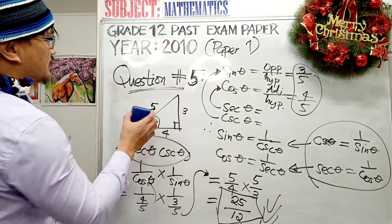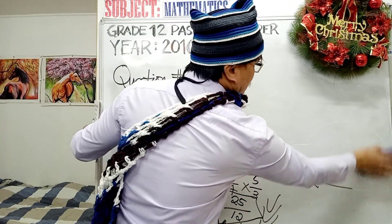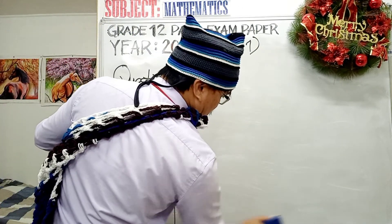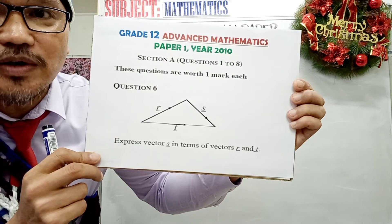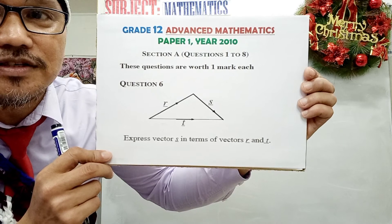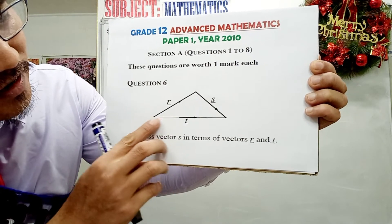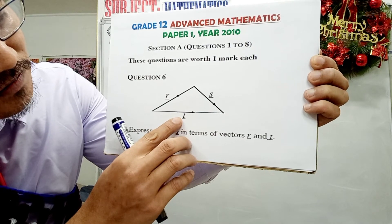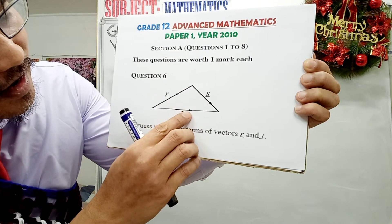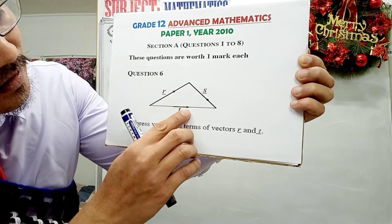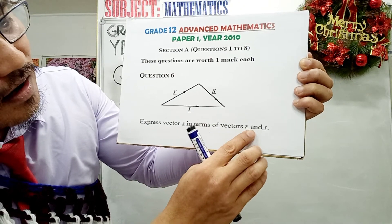Now let's move on to question number 6. This is question number 6, paper 1, advanced mathematics, grade 12 stream, year 2010. The topic is on vectors. We have this diagram — the vector. This is our resultant vector T, which equals R plus S. You look at the arrow as well — that's the sign for how to express vector S in terms of vectors R and T. If we rewrite this, take note of the arrow here: this is vector T, and this arrow here is vector R. This is an addition of vectors, and we have the vector S.